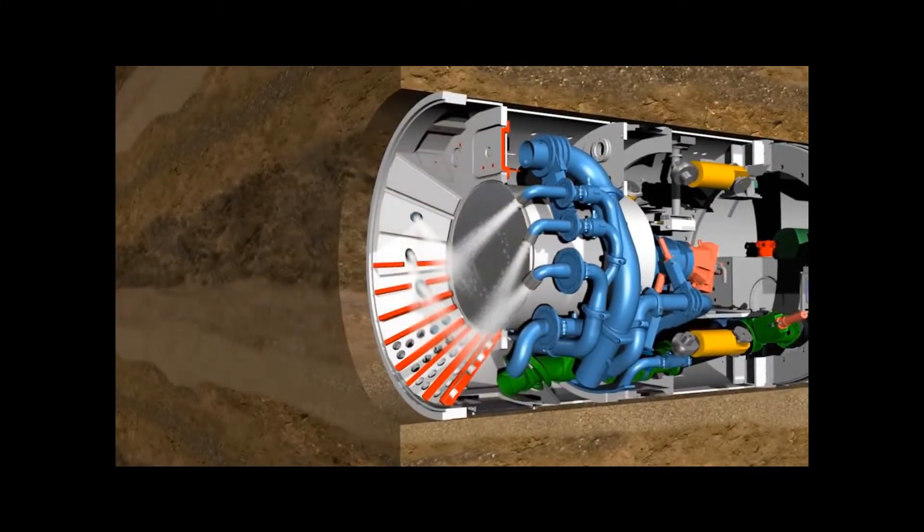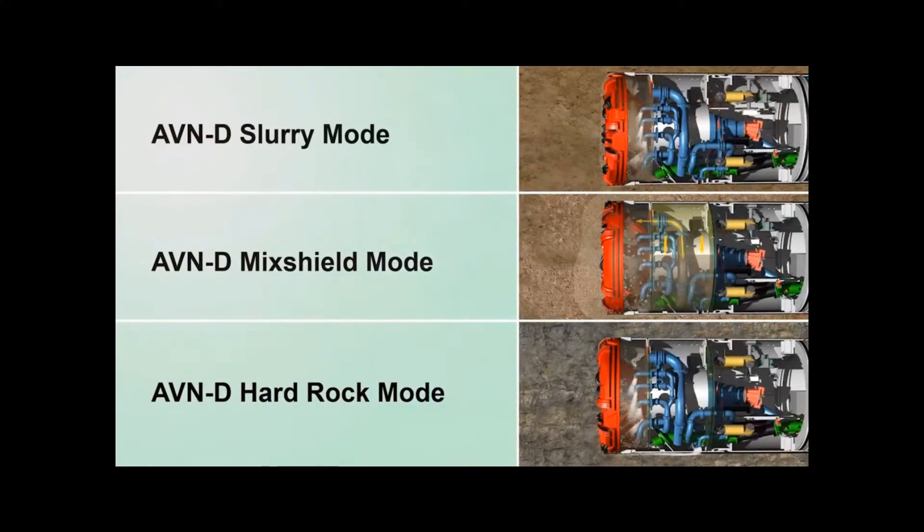The AVND machine concept allows the machine to switch at any time to one of three possible modes of operation: slurry mode, mix shield mode, and hard rock mode, and thus adapt to the geology.